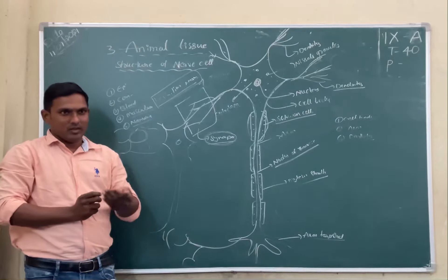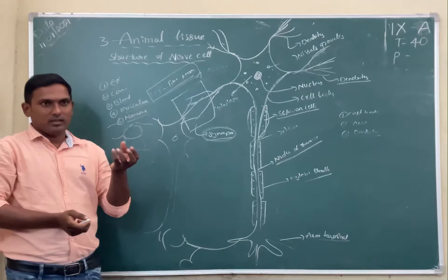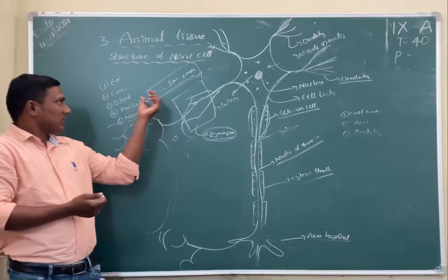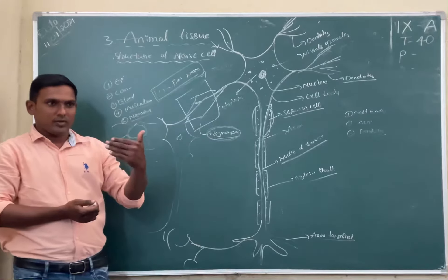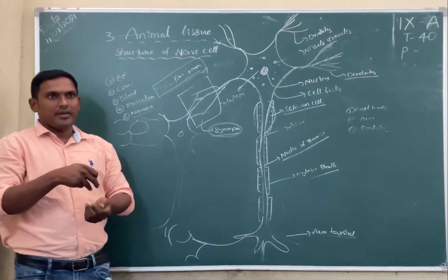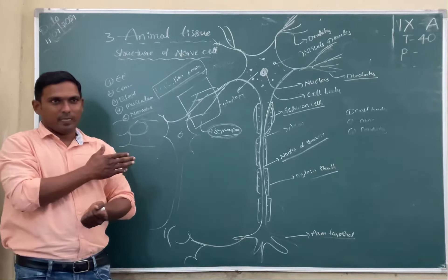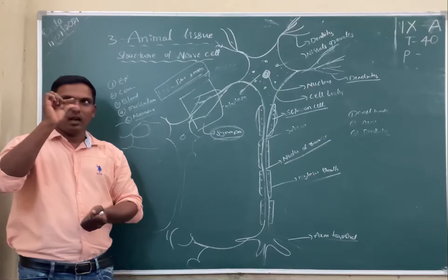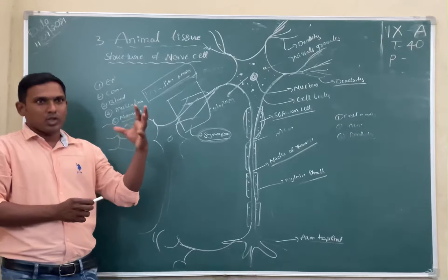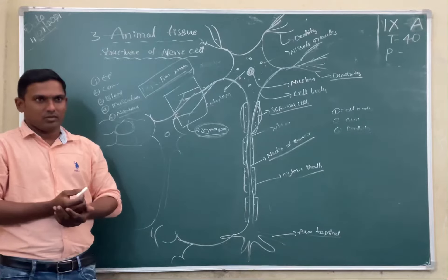When we touch hot objects or cold things, we take back our hands. How are we responding? Through stimulus, so information will travel. These neurons carry the information from body parts to brain and from brain to body parts. With this system only, we respond to stimulus when we are walking on the road. When we hear a loud sound, we move aside within a few seconds. Just like electricity carried through light, in our body also, neurons carry information towards the brain within a few seconds.